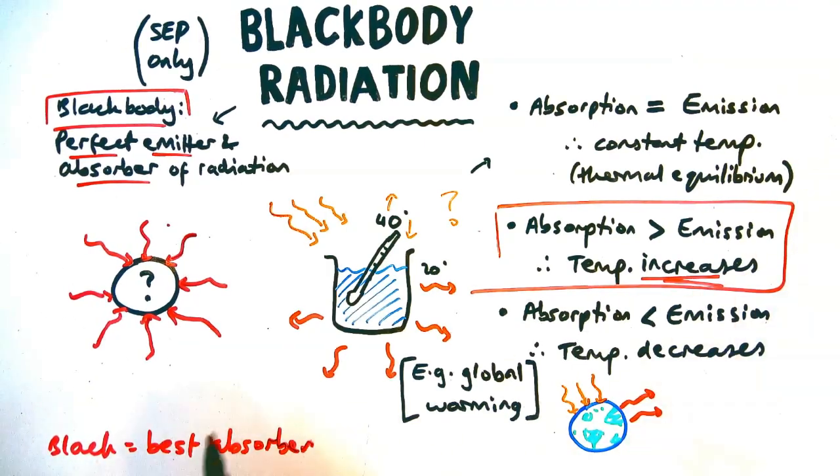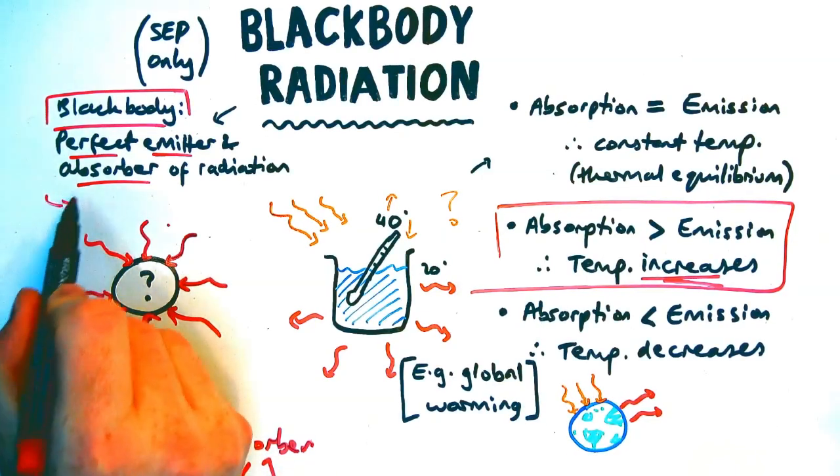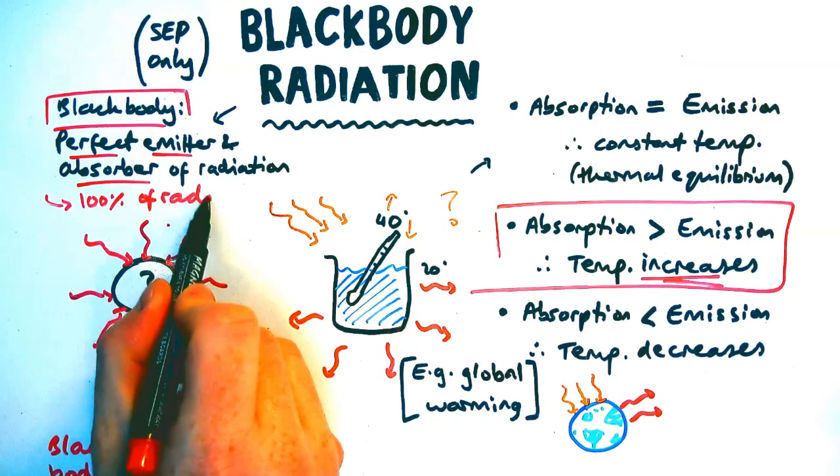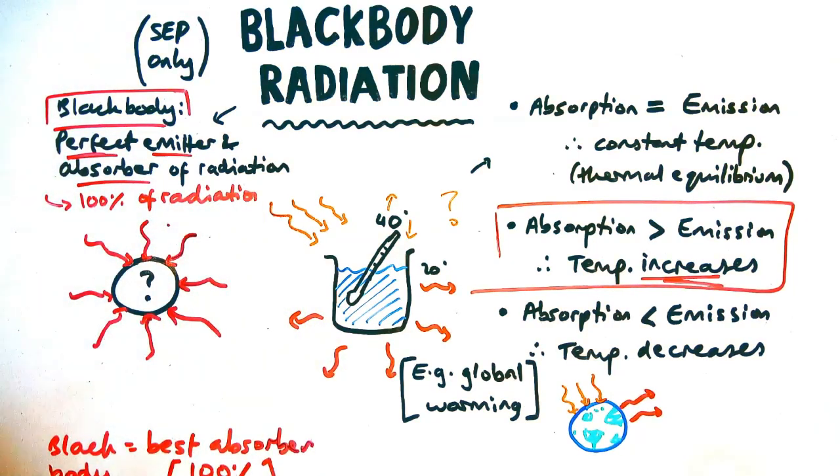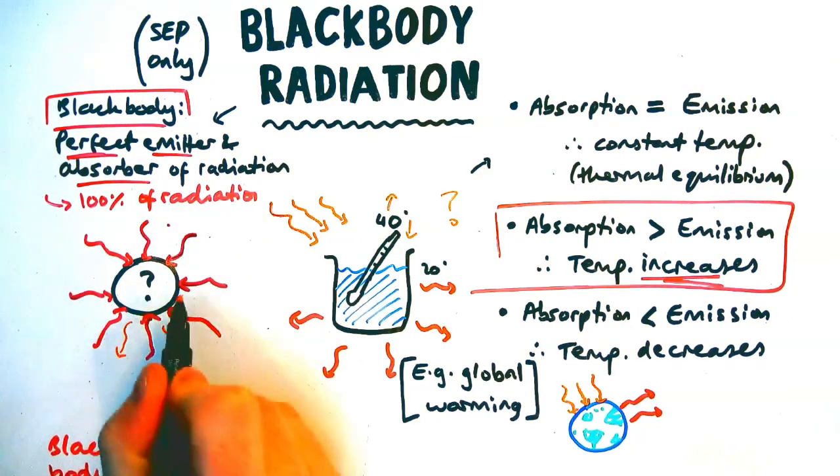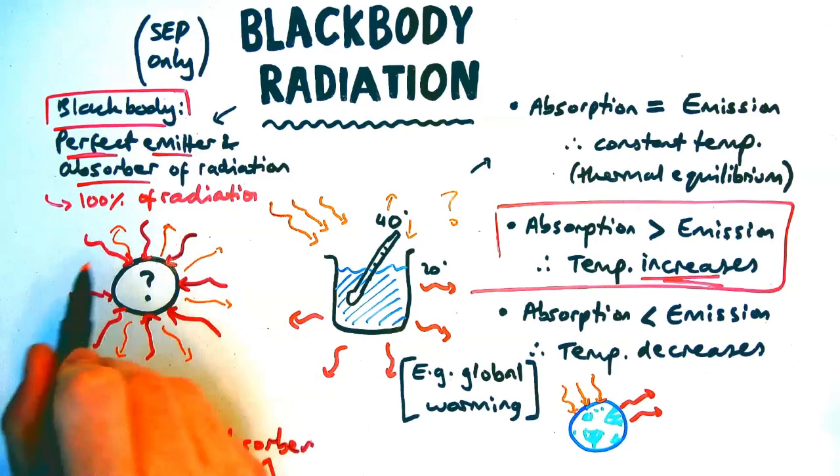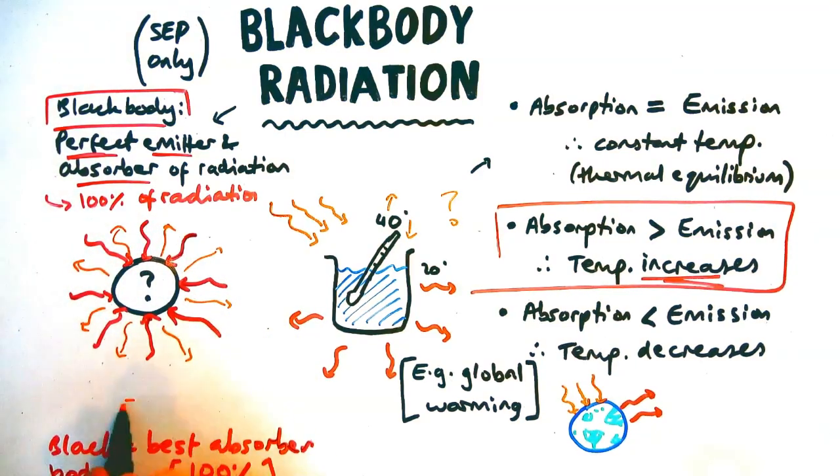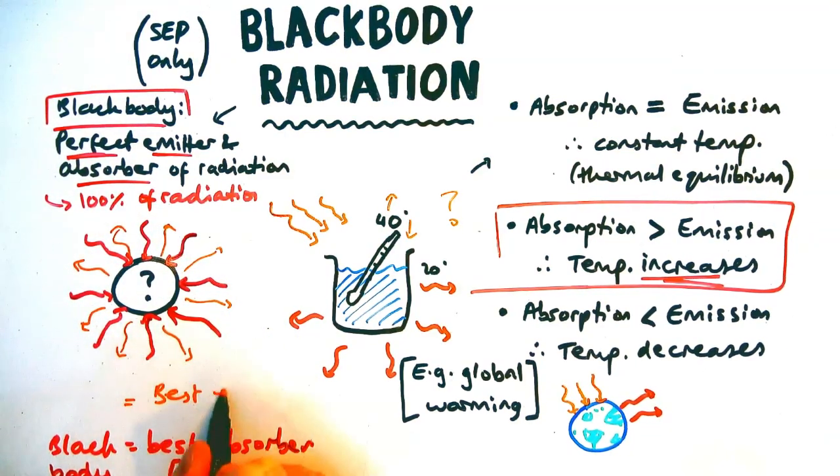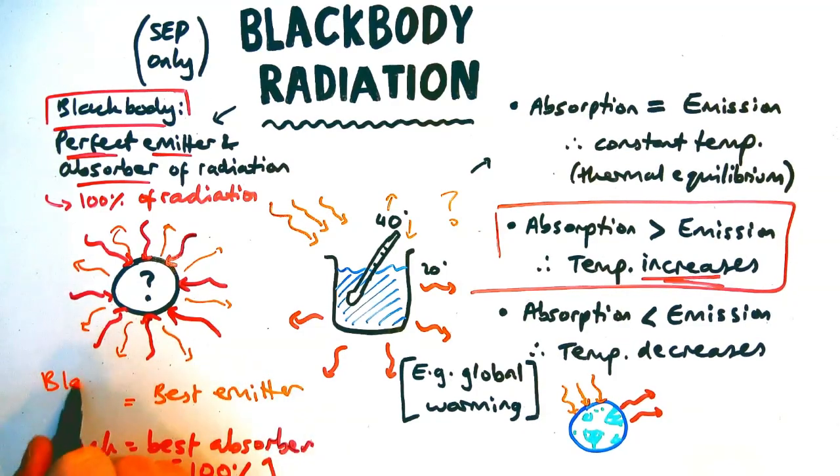So we should know black is the best absorbing material. Don't wear a black t-shirt on a hot day because you're going to get quite warm. But a perfect black body is one that absorbs 100% of the radiation. As well as that, it will re-emit, so not reflect, but re-emit 100% of that radiation.